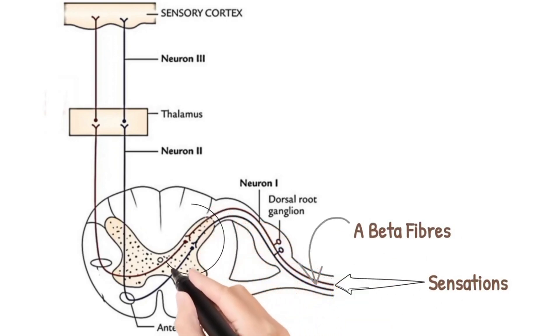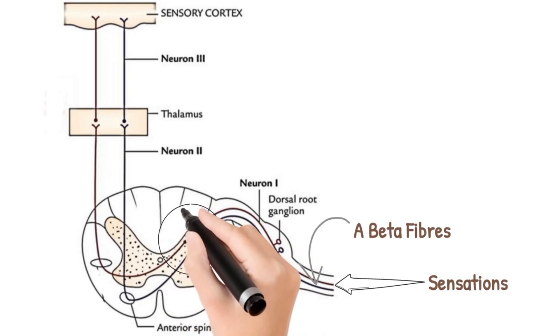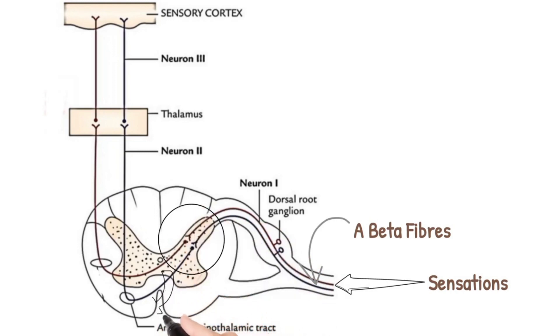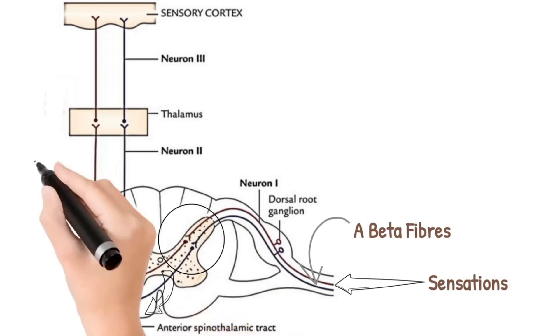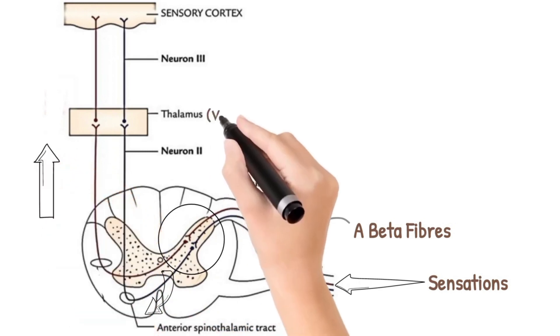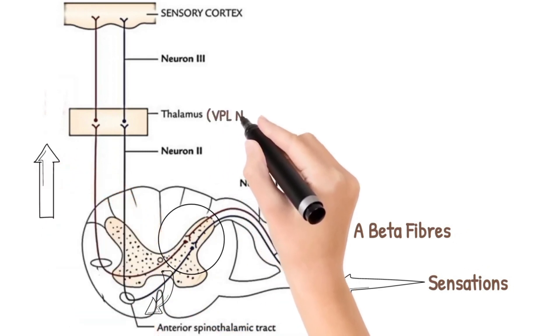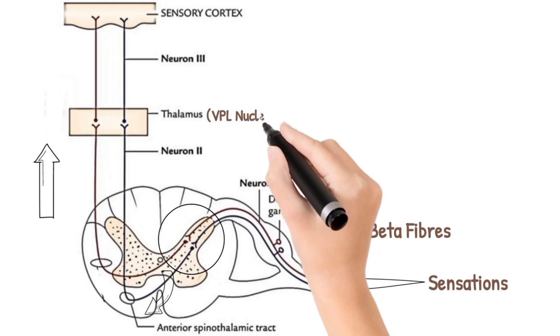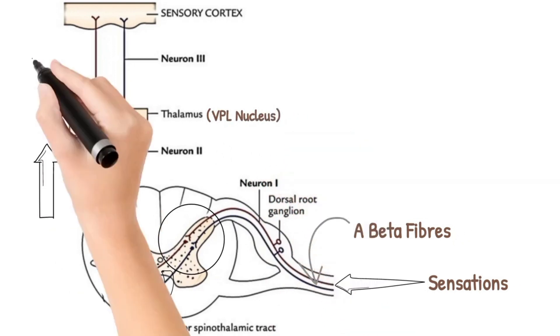The second order neurons originate and immediately decussate to the opposite side of the spinal cord in the form of anterior white commissure. These neurons then ascend upwards towards the ventroposterolateral or VPL nucleus of the thalamus. Here synapse occurs and third order neurons originate which ascend upwards towards the primary somatosensory cortex of the brain.